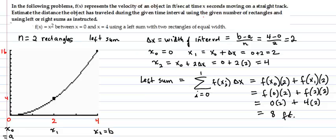In this problem, f of x represents the velocity of an object in feet per second at time x seconds moving on a straight track.